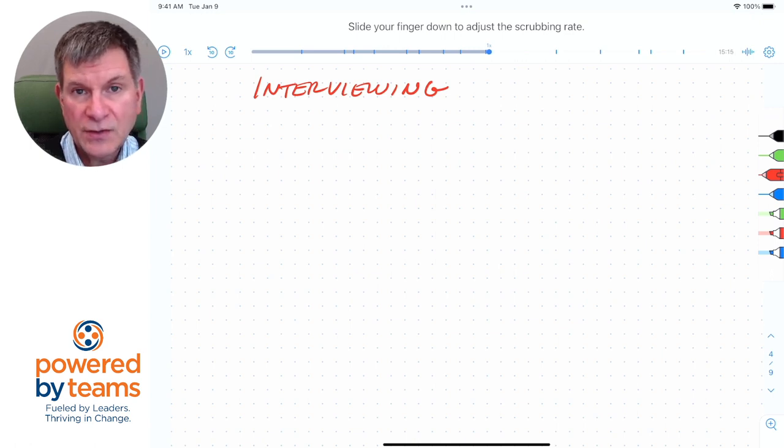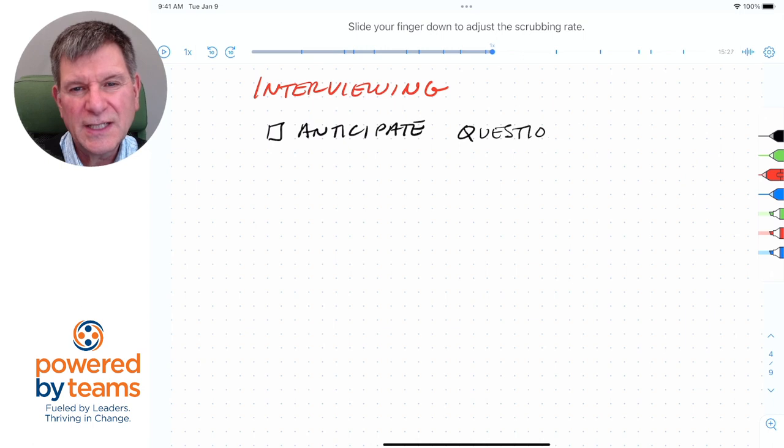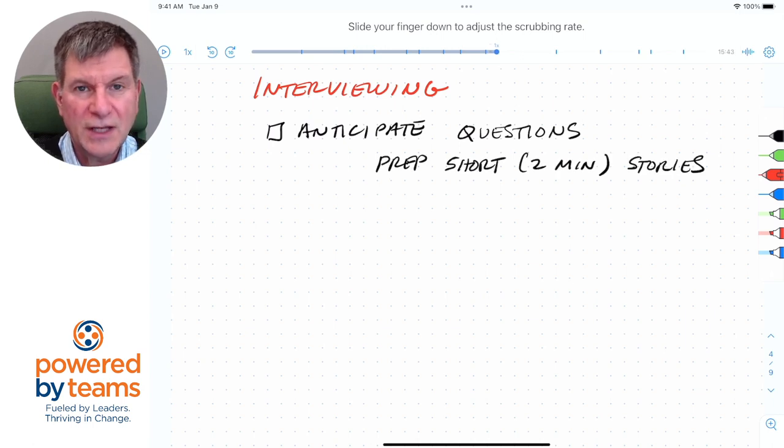As you sit down to interview, you can anticipate some of the questions that they're going to ask. So the first thing I recommend, and you've probably heard it from job search coaches, is prep some short stories. Think about two minutes that speak to your experience and abilities in situations for some of these questions that you can anticipate.